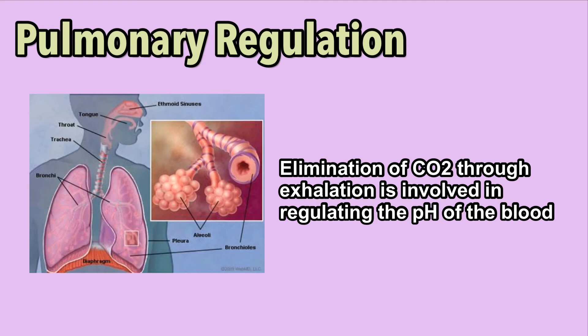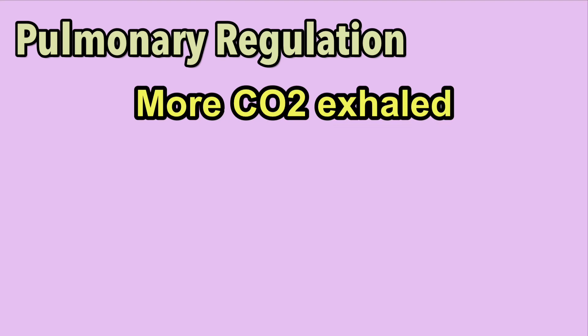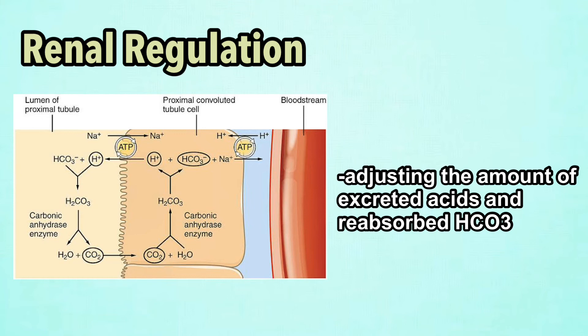Pulmonary regulation: elimination of carbon dioxide through exhalation is involved in regulating the pH of the blood. The amount of carbon dioxide exhaled is regulated in response to changes in acidity. A decrease in pH is sensed by central or arterial chemoreceptors and leads to deeper and faster breathing, where carbon dioxide is exhaled, less hydrogen is made, blood acidity decreases, and blood pH returns to normal. Pulmonary regulation is faster — it takes place within minutes to an hour. The final mechanism is renal regulation: blood pH is regulated through excretion of hydrogen ions and reabsorption of bicarbonate ions through the kidneys. The kidneys control blood pH by adjusting the amount of excreted acids and reabsorbed bicarbonate. Renal regulation is slower — it usually takes days to respond to pH disturbances.